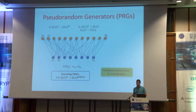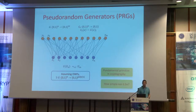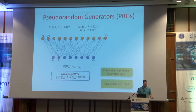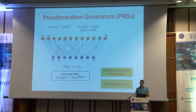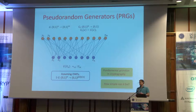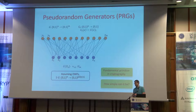A natural question, given that this is such a basic primitive, is: how simple can this primitive be? What do I mean by simple? There are many ways to define simplicity of a primitive. Specifically for a PRG, one way to think about it is just saying what's the circuit size that computes it. Another is what's the depth of the circuit, and there may be more.